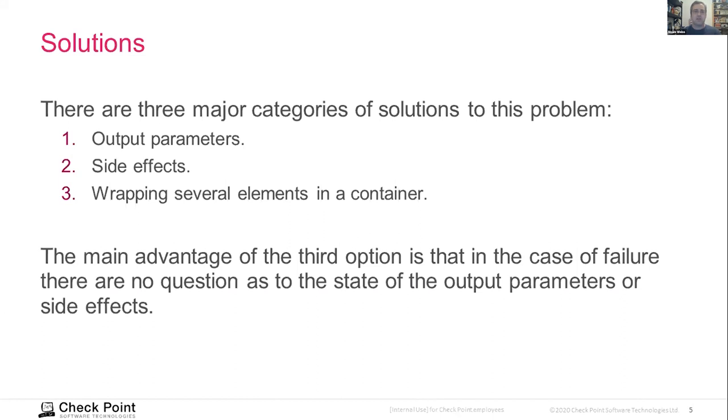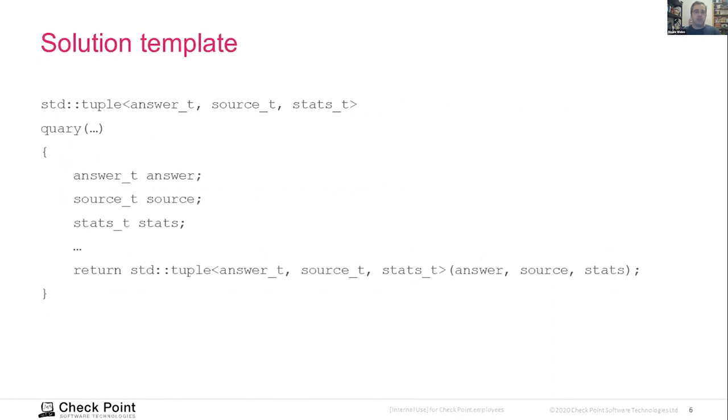And then I have one container that actually contains all three of the elements that I want. And there are pros and cons to each of these approaches. But the thing that bothers me, particularly when I look at code, is how do we handle failures? And the main problem both in the first and second kinds of problems is there is no intuitive way to know what happened to the output if a function failed. Were the output parameters already set or not? Were side effects already taken place or not?